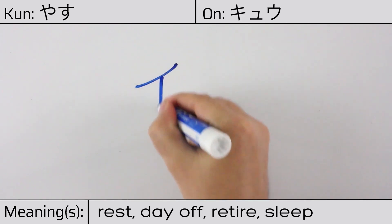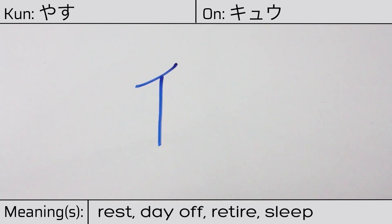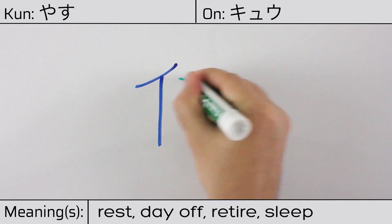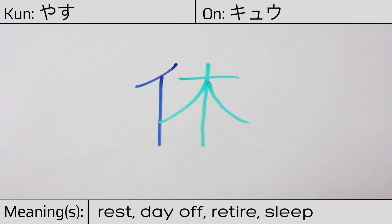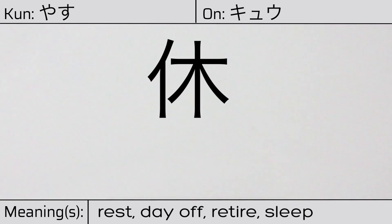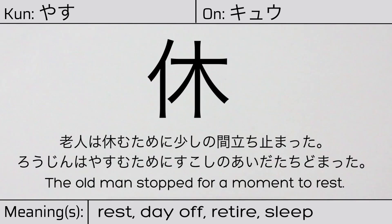This character is made up of the following radicals or parts: the stylized hito or minben, followed by the kanji character ki meaning tree. You can remember this kanji by the following hint: a person resting beside a tree. Our example sentence is: The old man stopped for a moment to rest.